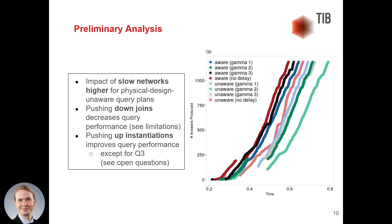In the experiment, we can conclude that impact of slow networks is higher for physical design unaware query plans, and pushing down joins decreases query performance. We will talk about that in limitations further.